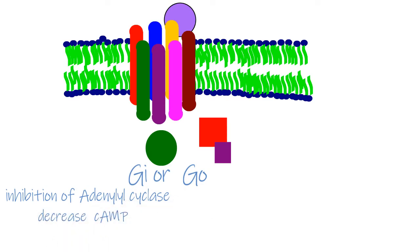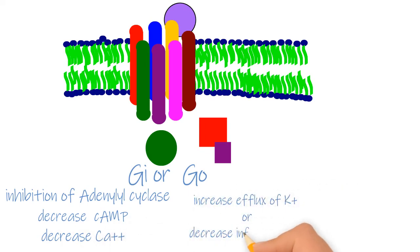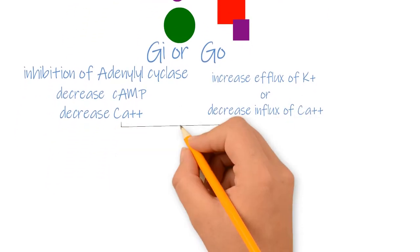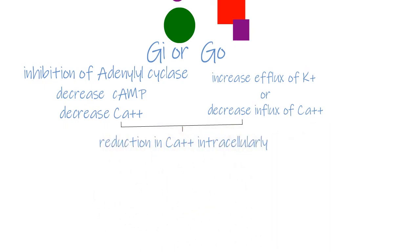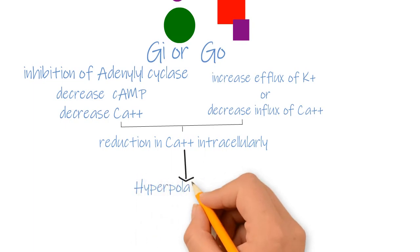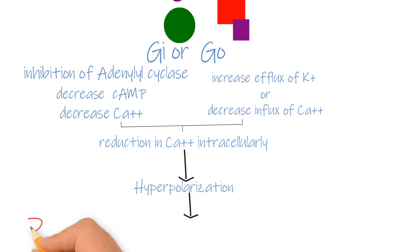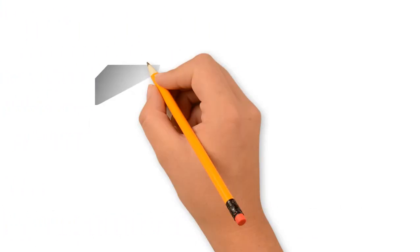The G-protein subunits involved in opioid action are Gi and Go. Gi is an inhibitory protein for adenylyl cyclase, which indirectly reduces the level of cyclic AMP and calcium. Go causes the efflux of potassium and inhibits the influx of calcium. Both actions result in a reduction in intracellular calcium concentration, leading to hyperpolarization of the prejunctional neuron and thus a decrease in the release of neurotransmitters.